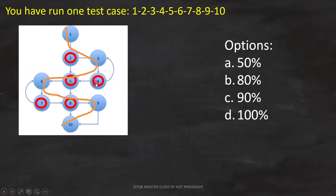For each of these conditions, only one path is covered, and another path is not covered. Therefore, only 50% of the decision is covered. Option A is the answer.